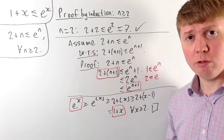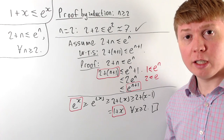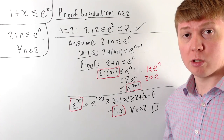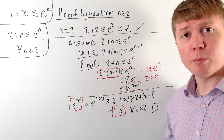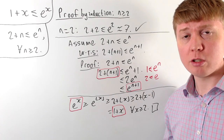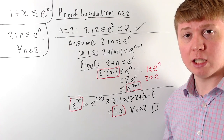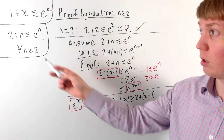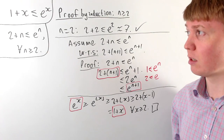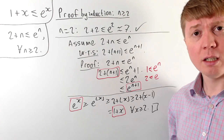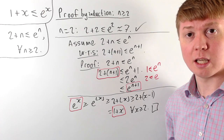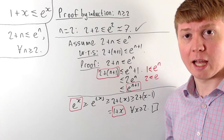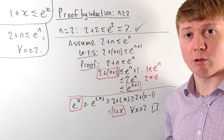We haven't shown this for values of x less than 2, but I still think it's really interesting that we can use a proof by induction here. It's really neat to see how we can generalise the result from integer values of n and extend the inequality to hold for real numbers x greater than or equal to 2.